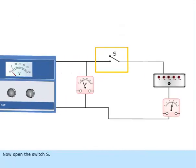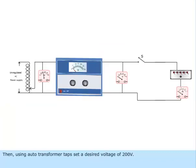Now open the switch S. Then, using auto transformer taps, set a desired voltage of 200 volts. Repeat the same procedure as in the previous case.